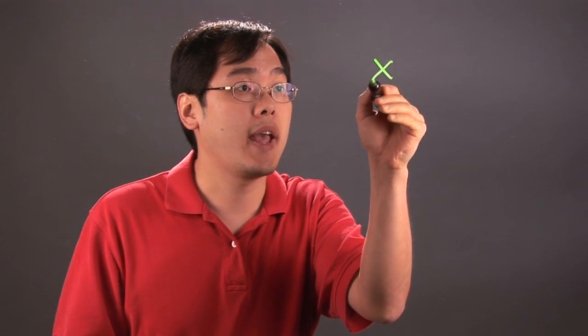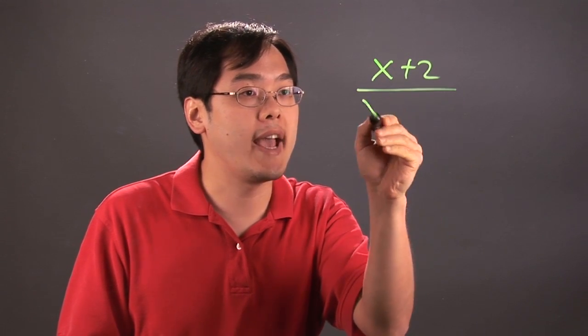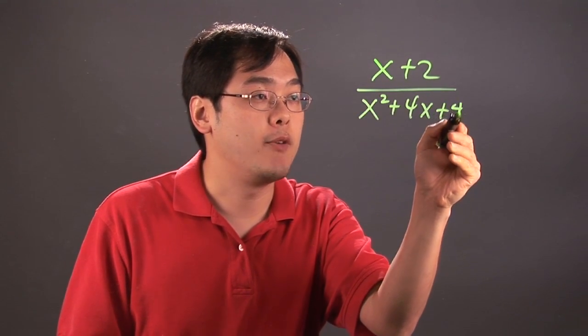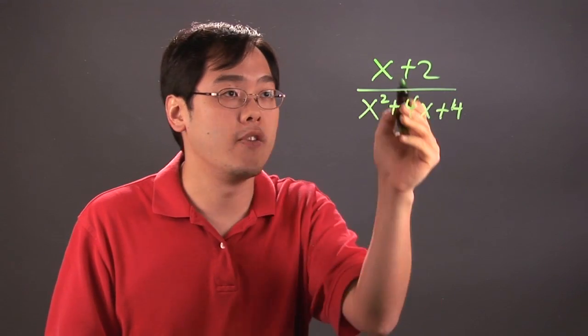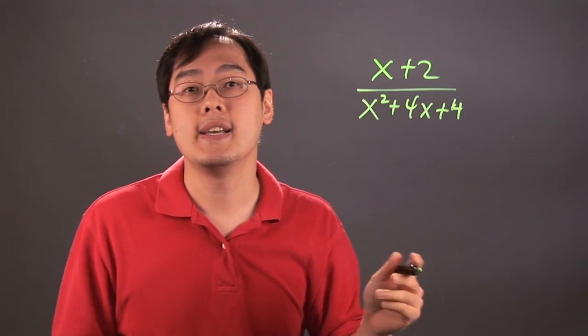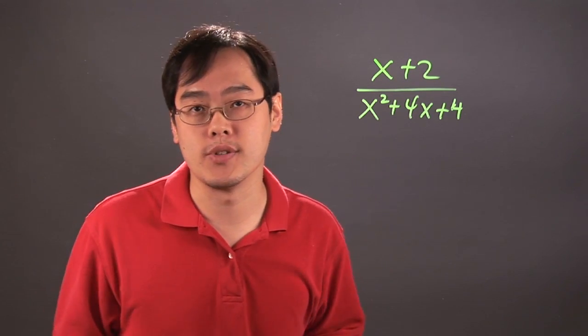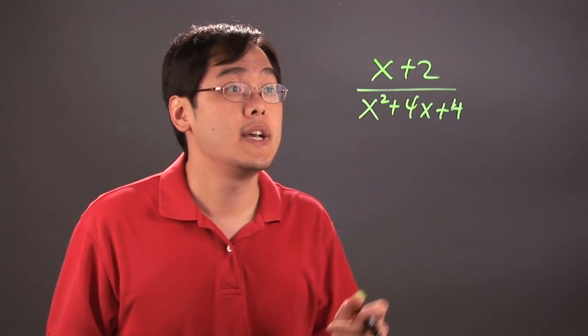Suppose you have x plus 2 over x squared plus 4x plus 4. In order to reduce a fraction made of a binomial and a trinomial, the terms have to be factorable. If it's not factorable, you cannot reduce it. That's really the fundamental rule.